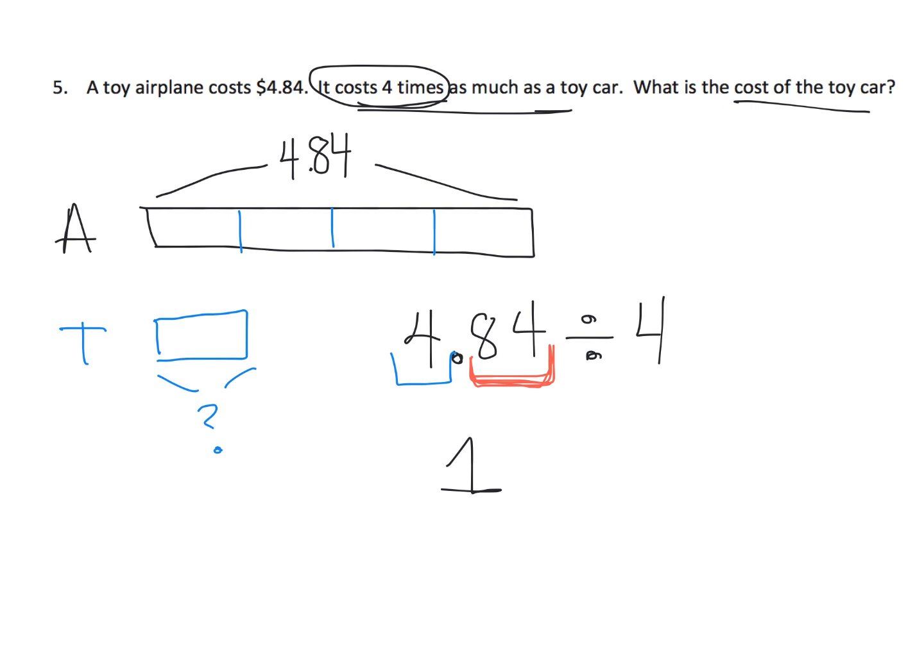Now let's take this 84 hundredths. 84 hundredths divided by four. Think about 84 divided by four. We want students to think, oh, that's 21. So that's 21 hundredths because this is 84 hundredths divided by four. So that gives us 21 hundredths. And so the cost of the toy car is $1.21.